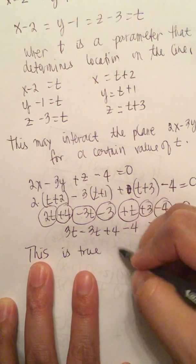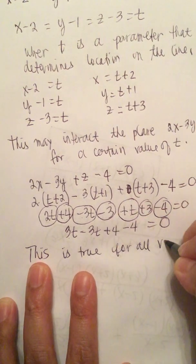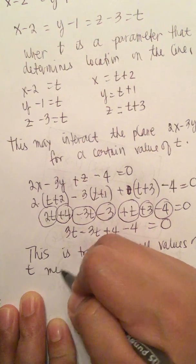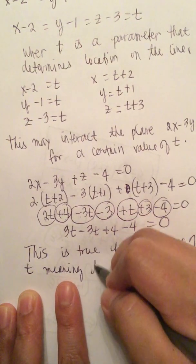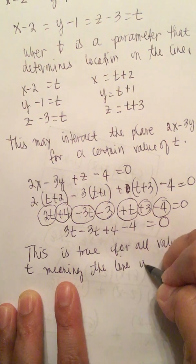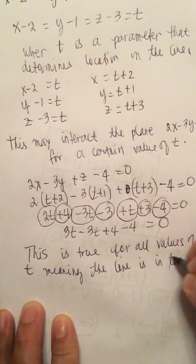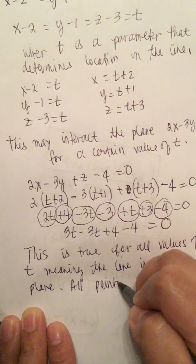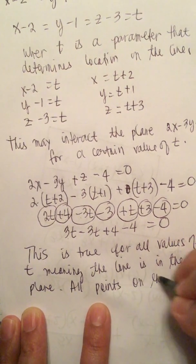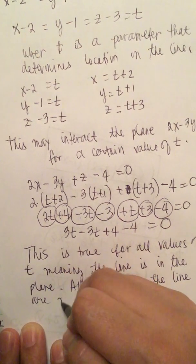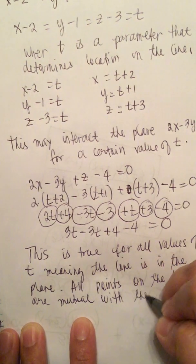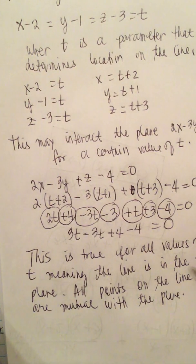This is true for all values of t, meaning the line is in the plane. All points on the line are mutual with the plane. Now there's another way to do this.